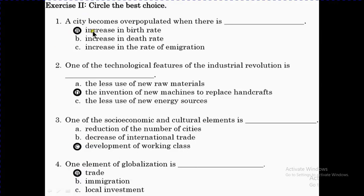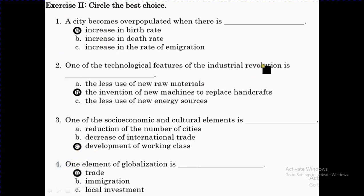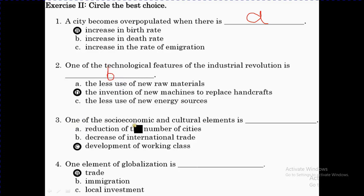Next, circle the best choice. A city becomes overpopulated when — the best option is A. One of the technological features of the industrial revolution is B. One of the cultural elements is option C. And one element of globalization is A, which is trade. Thanks for watching.